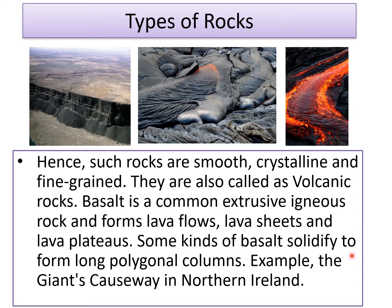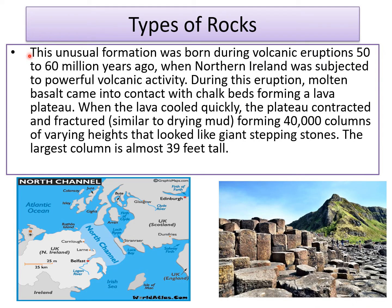Some kinds of basalt solidify to form long polygonal columns, for example the Giant's Causeway in Northern Ireland. The Giant's Causeway is an unusual formation born during volcanic eruptions 50 to 60 million years ago when Northern Ireland was subjected to powerful volcanic activity. During this eruption, molten basalt came into contact with chalk beds forming a lava plateau. When the lava cooled quickly, the plateau contracted and fractured, very similar to drying mud, forming 40,000 columns of varying heights that look like giant stepping stones. The largest column is almost 39 feet tall.